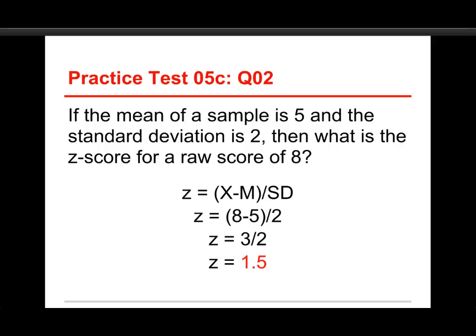So in this case, it's the score of x, that's 8, and subtract the mean of 5, and then divide by the standard deviation of 2. Well, 8 minus 5 is 3. We divide that by 2, and the answer is 1.5. So if this person got a raw score of 8, it means that they are 1.5 standard deviations above the mean of 5.